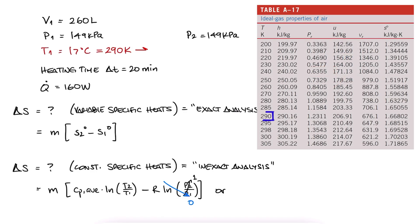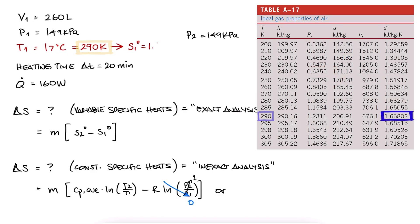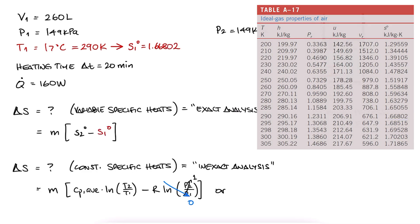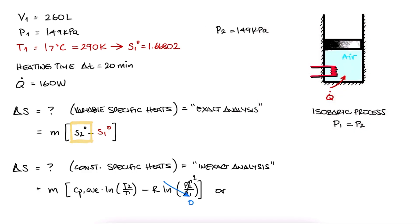For state 1, we have the temperature, so we can just look up the reference entropy for it. For state 2, we first need to fully define it. We know that the energy that we put into a system of a constant pressure process is equal to the enthalpy change. Therefore, the wattage times the time in seconds is equal to the energy provided and also equal to the change in enthalpy.